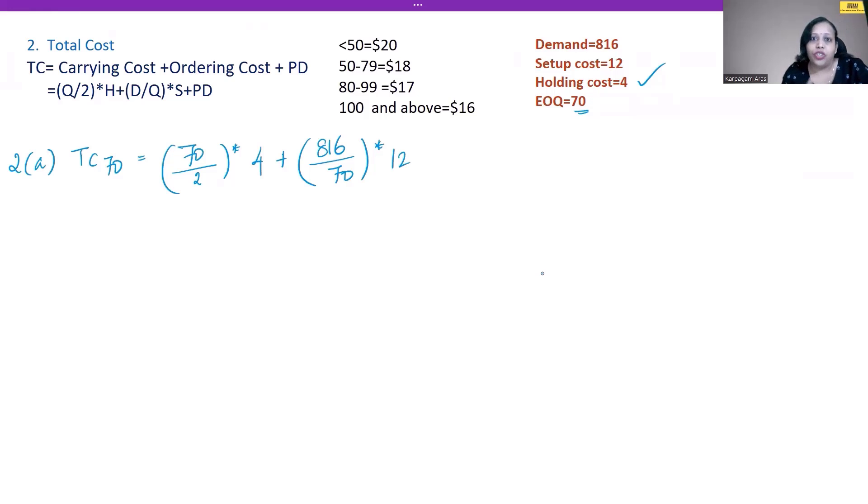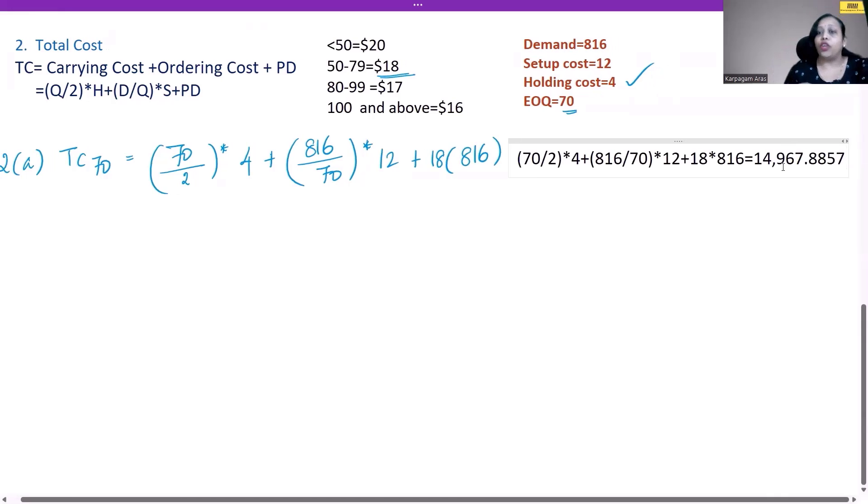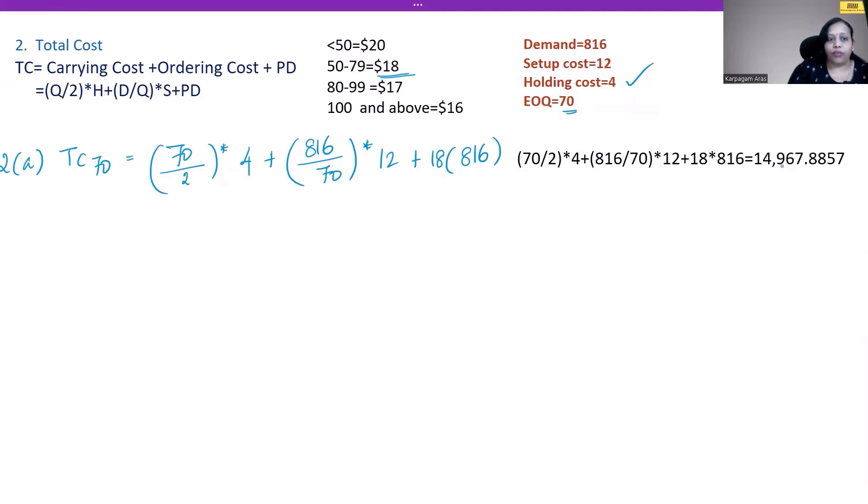Quantity is our economic order quantity multiplied by the setup cost. In this case, the purchase price is going to be different from one level to another. We need to include that pricing point here as well. I am taking the price at 50 to 70, which is $18, and the demand is 816. It will give us a value of 14,967—so TC at 70 is 14,968.